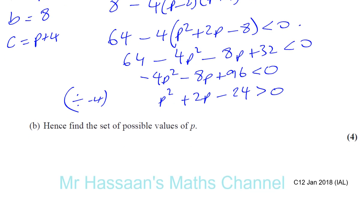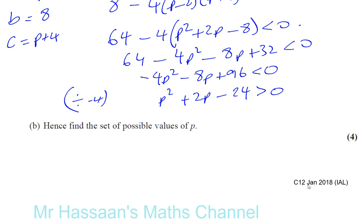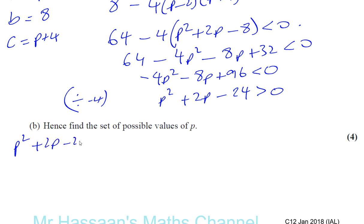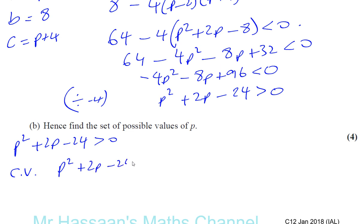The question also says, hence find the possible set of values of p. So I need to solve the quadratic inequality p squared plus 2p minus 24 is greater than 0. Note that this is not the equation of the original graph — it is an equation made from the discriminant. To solve a quadratic inequality, we first find the critical values by equating it to 0: p squared plus 2p minus 24 equals 0.